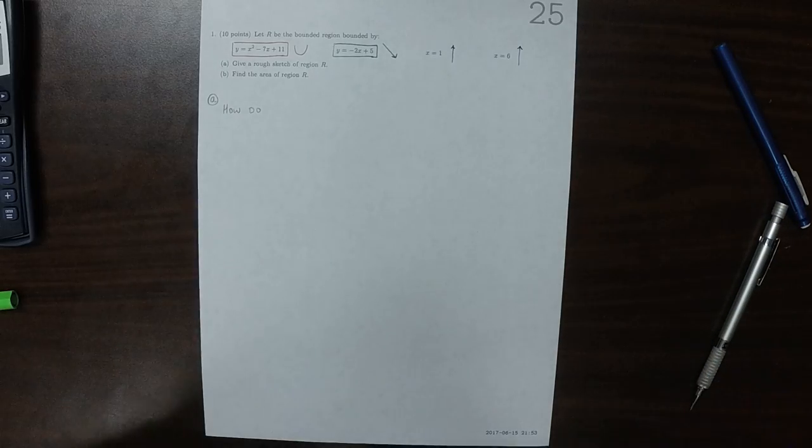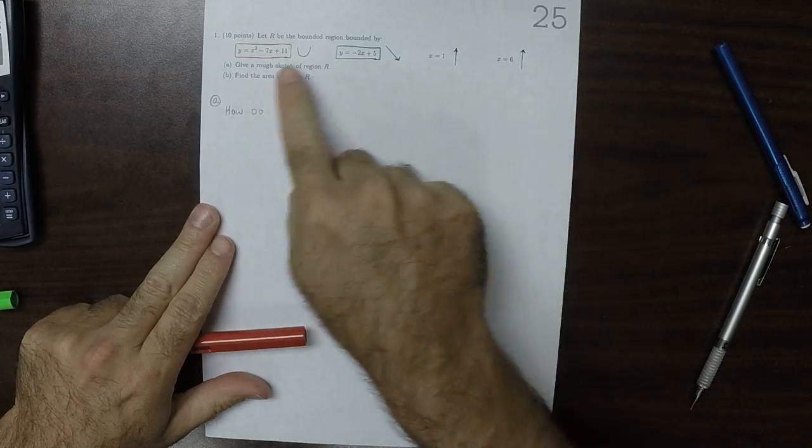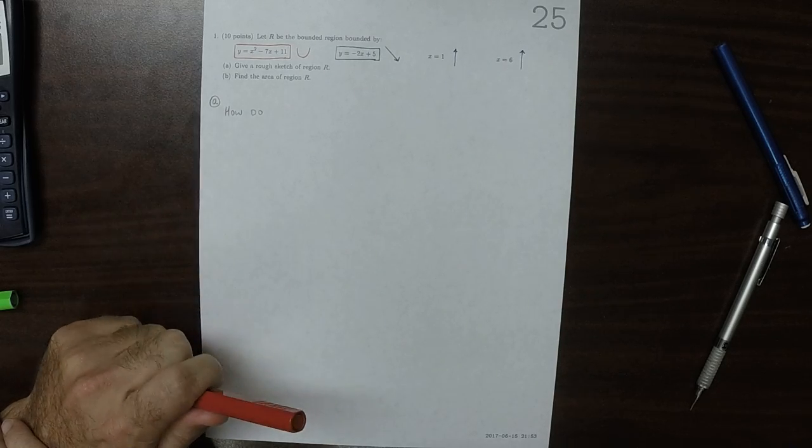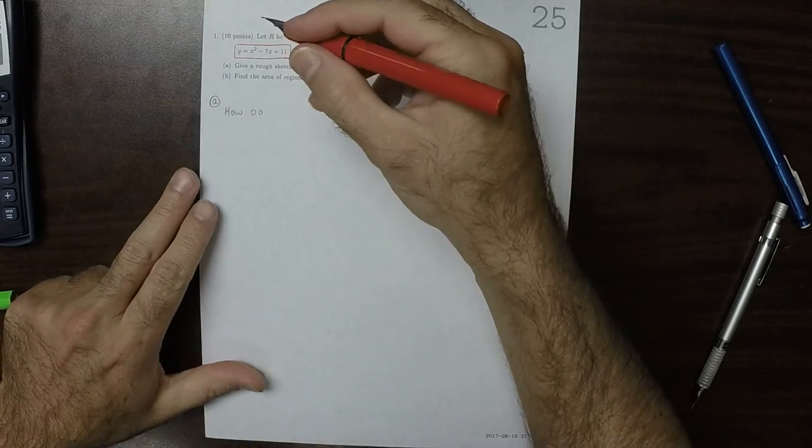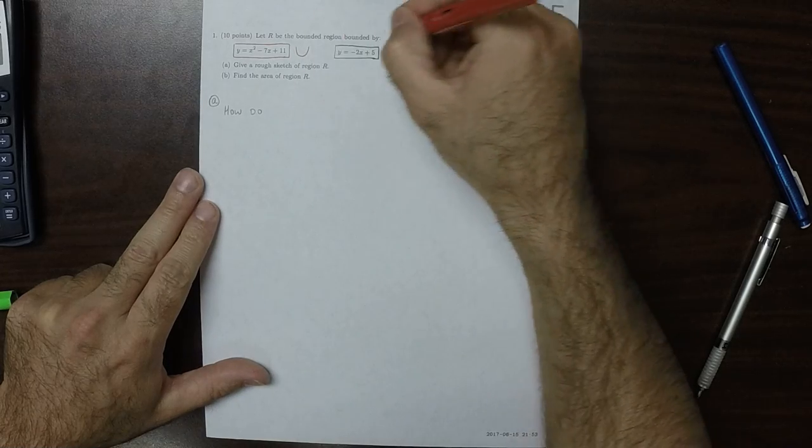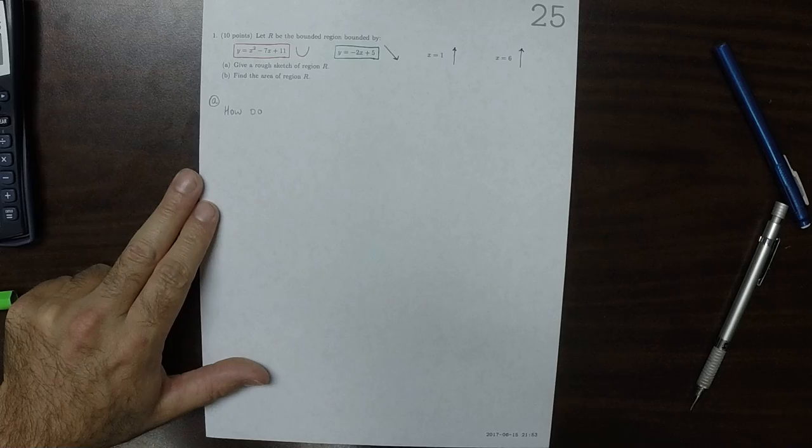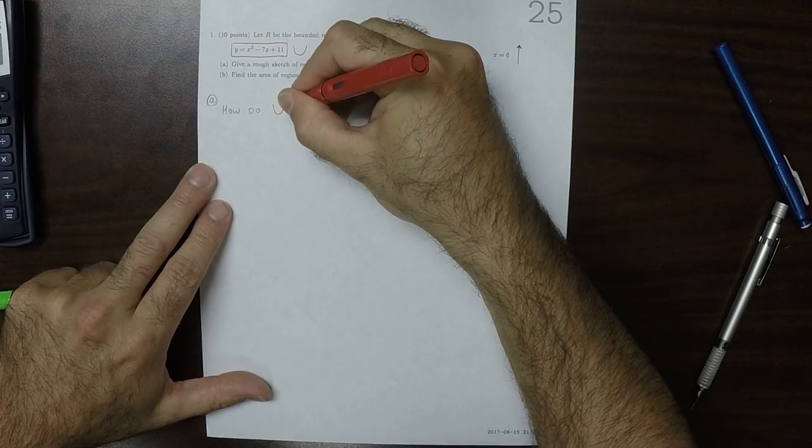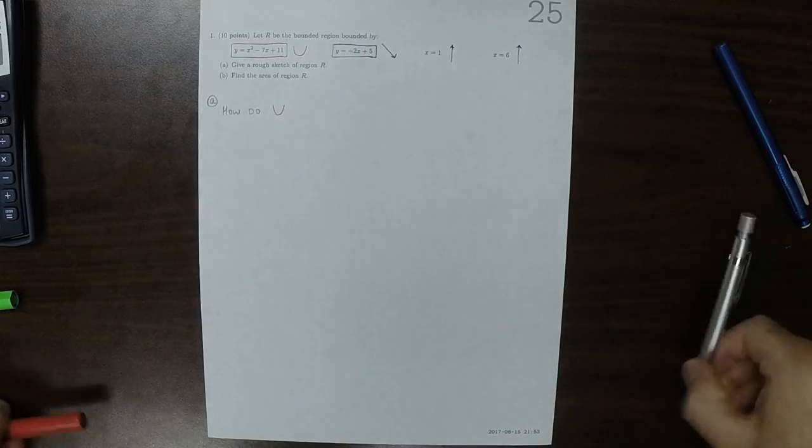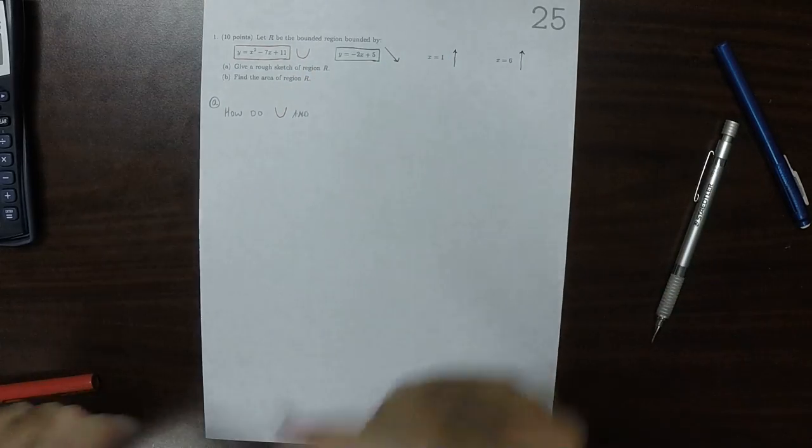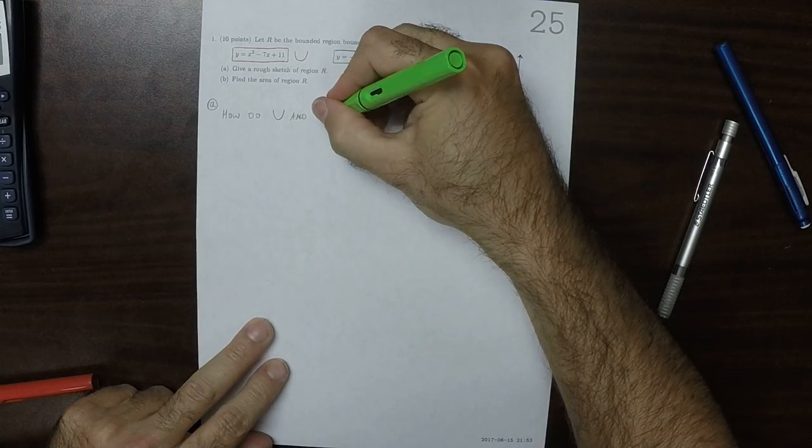how do all of these intersect with each other, or not? So I'll focus on these two, the red and the green, the parabola and the sloped line, first. So how do the red and green intersect?